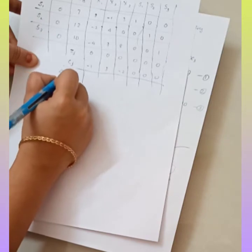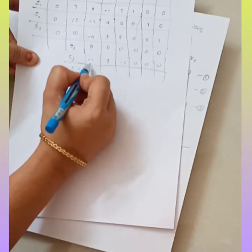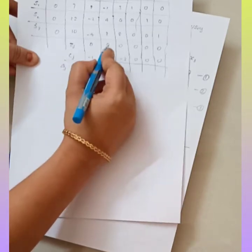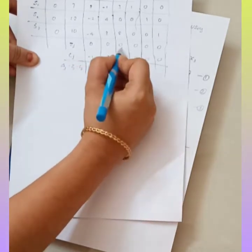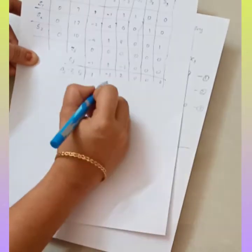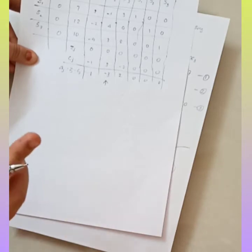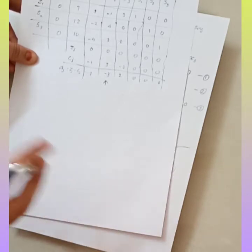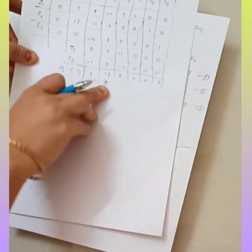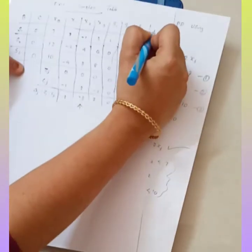Delta J is ZJ minus CJ. So ZJ is 0 minus minus 1, that is 1. Again, 0 minus 3 is minus 3. Then 0 minus minus 2 is 2, then 0, 0. You have one negative value. When you have a negative value for a maximization problem, that means the solution is not optimal.